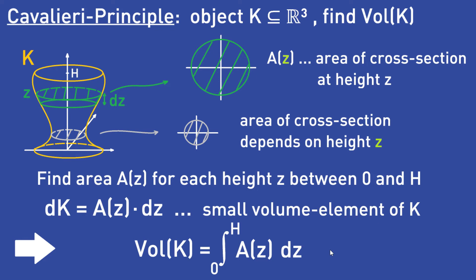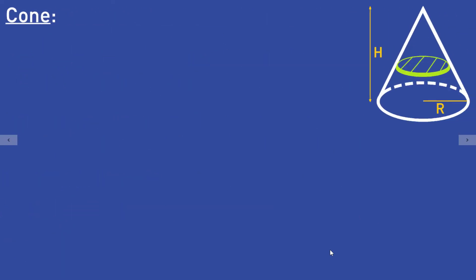Let's try this out. Here we have a cone with radius capital R and height capital H. We want to find the volume of that cone. When we cut through the cone horizontally we get a disk. We want to find the area of the disk at each height z, so we need the radius R(z) of the disk. The radius depends on z because if we are near the bottom of the cone the disk is larger, and if we go to the top of the cone the disk becomes smaller.